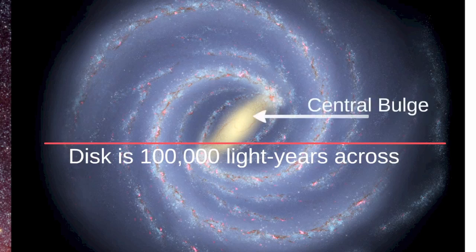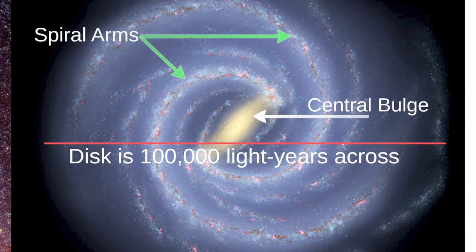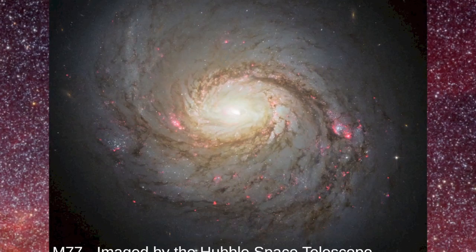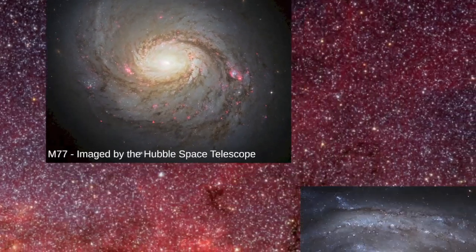Stars within the bulge are primarily old and devoid of elements heavier than helium. Stars within the rest of the disk are both young and old, and there is a great variety in the abundances of heavy elements. Stars within the disk create a pattern of spiral arms, making our Milky Way an example of a spiral galaxy. Seen from top down, the Milky Way would resemble many of the spectacular spiral galaxies astronomers have imaged using Earth and space-based telescopes.